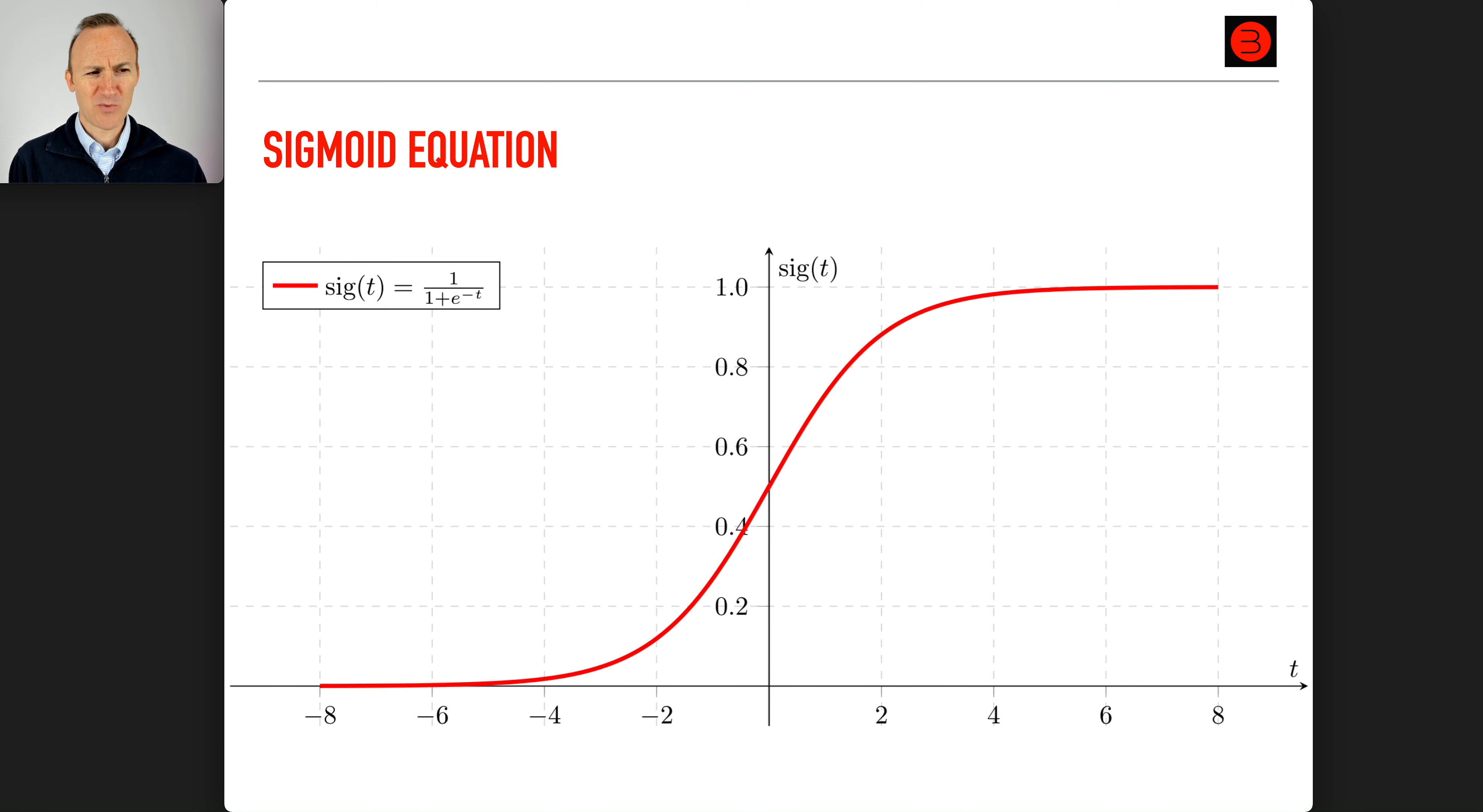If you want to analyze this, you could think about what happens in three cases: zero, large t, and very negative t. If you plug in zero, e to the zero is one, and one over one plus one is one half. That shows in the curve: when x is zero, y is one half. Imagine you have a really big value of t, like a million.